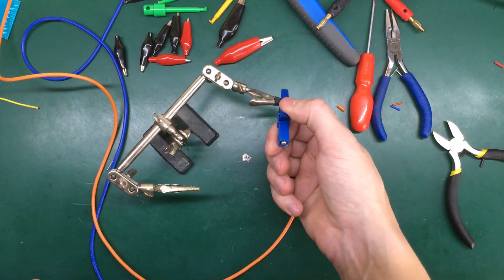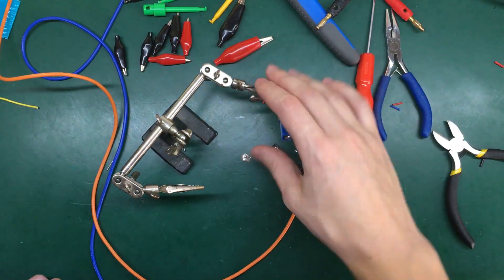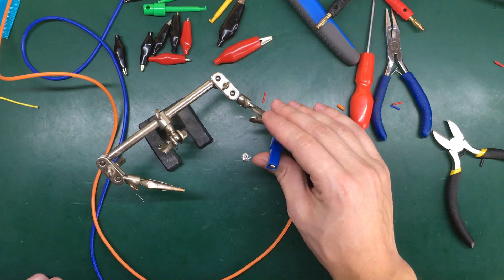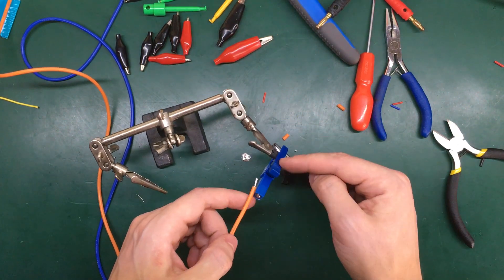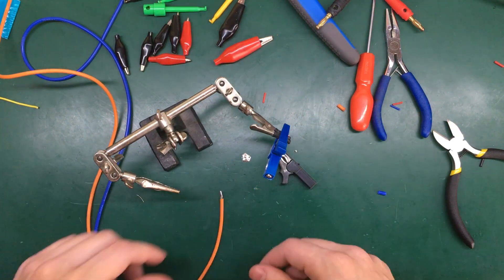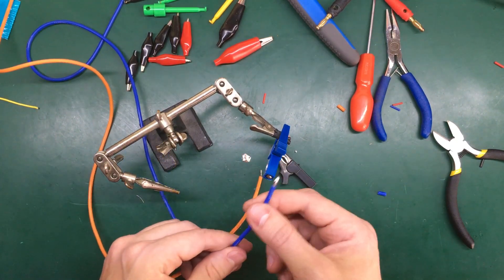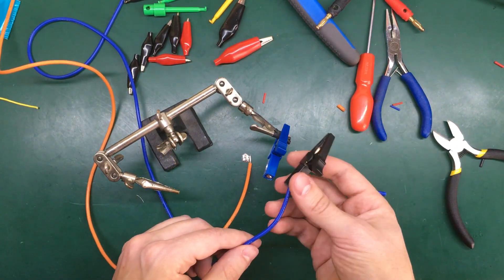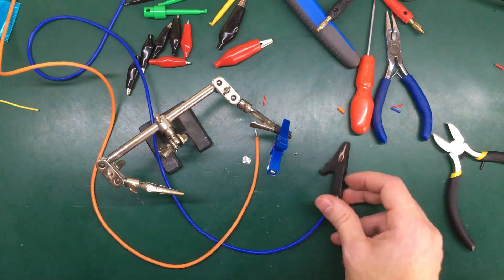Also I don't have a red alligator clip. So I'm going to use the blue one for the positive and I'm going to paint it red later. And I'm going to use the blue wire as the negative and connect it to the black alligator clip.